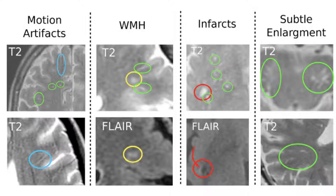As such, the burden of PVS is proposed as a brain imaging marker. Visual and manual scoring of PVS is a tedious and observer-dependent task. Automated methods would advance research into the etiology of PVS.